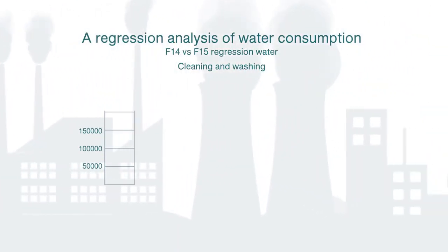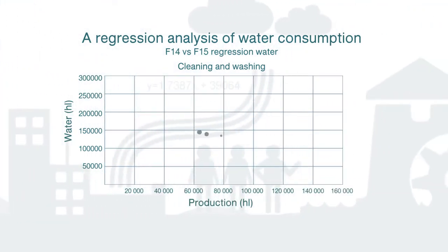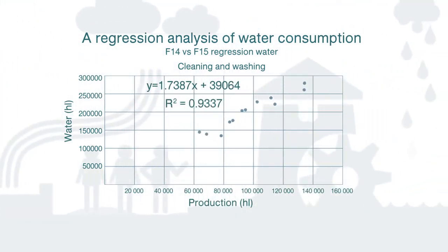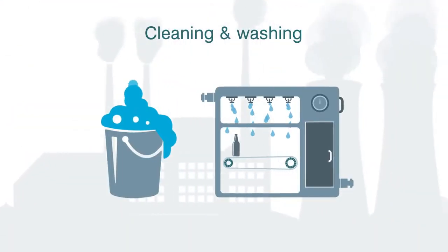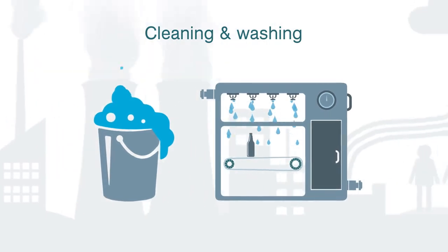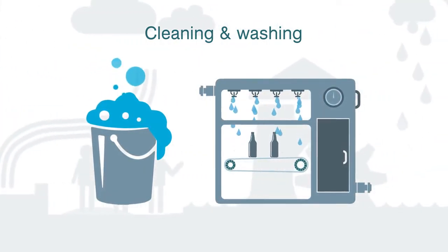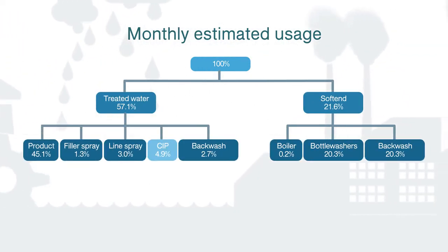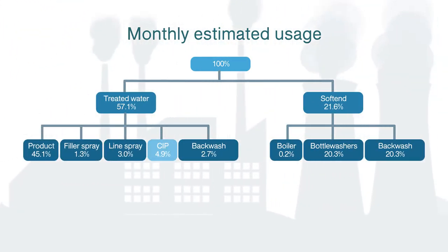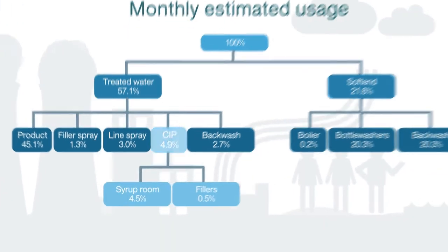The data was plotted using regression analysis to determine the water baseload and baseline for the production site. The results highlighted cleaning and washing within the process as a significant contributor to water consumption. A common practice opportunity was identified to recover and reuse the final rinse water from the cleaning-in-process (CIP) operations.